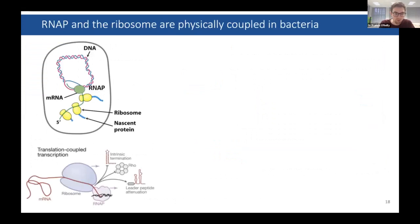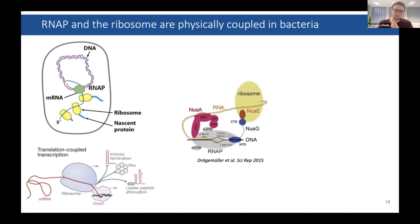My PhD lab had done pull-downs in this species and shown that when you pull down the RNA polymerase you pull down the ribosome and vice versa, but they couldn't study this ex vivo — the whole thing falls apart when you break open the cell, which is not unexpected given the DNA and RNA required in this complex. In E. coli, people proposed coupling via NusG: this transcription elongation factor would bind the RNA polymerase on one end and the ribosome on the other. NusA is also bound in this complex along genes, but wasn't proposed to be involved in the coupling.